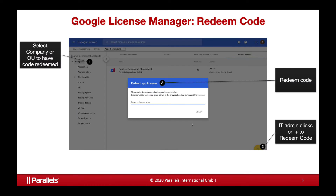From a license point of view, Parallels Desktop for Enterprise user license redemptions are done in Google Admin Console. The process is fairly easy. First and foremost, a license for Parallels Chromebook Enterprise is required. Select the company or organization unit where the license will be applied. The IT administrator clicks on plus to redeem the license code, and the code is redeemed in Google Admin Console.